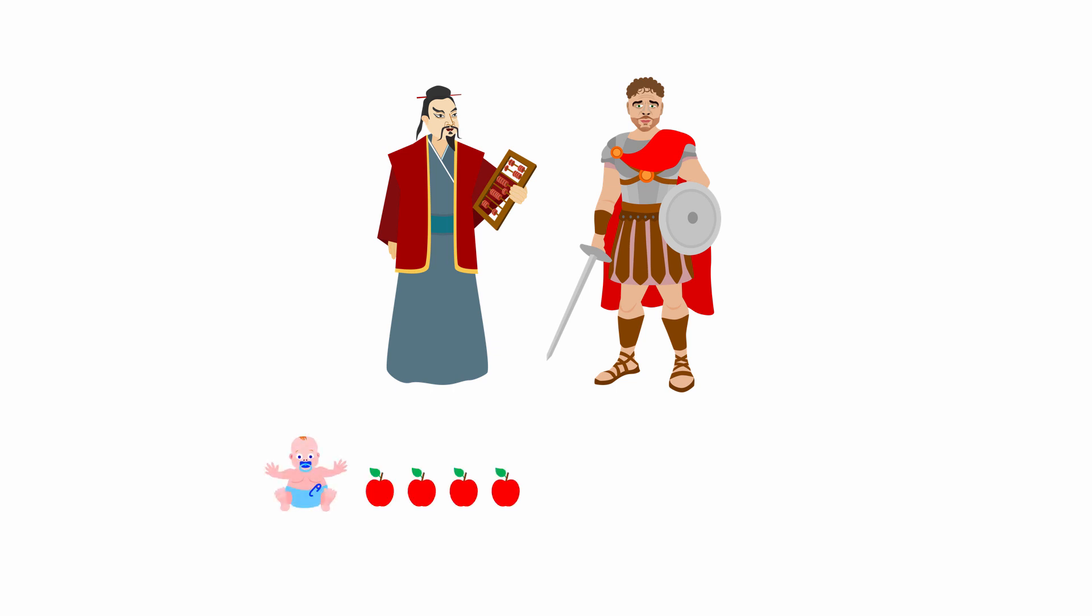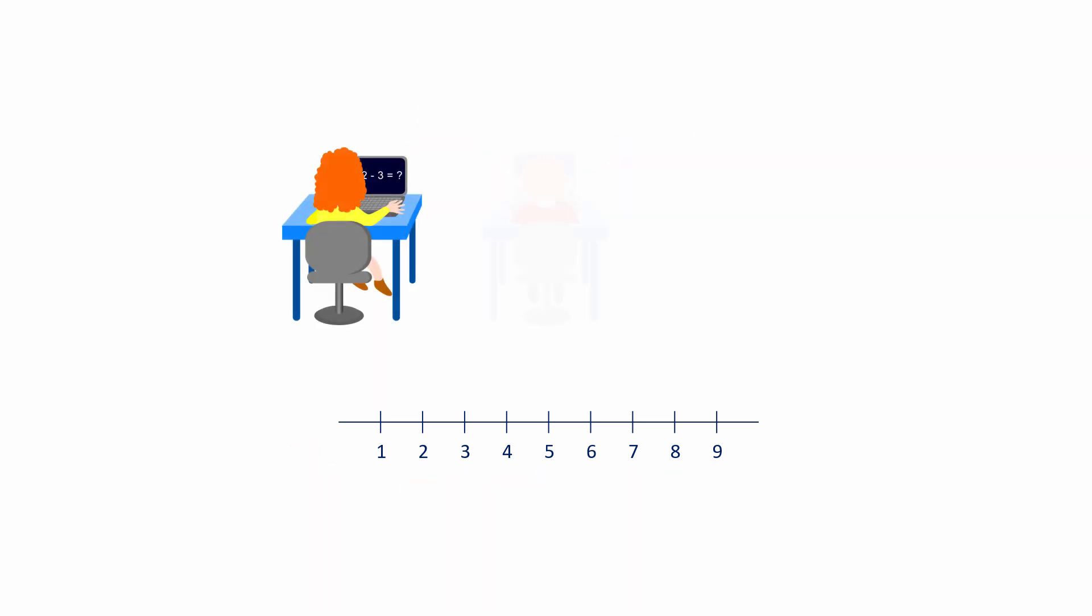From an early age, even as we're learning to talk, we learn to count using positive whole numbers, the so-called natural numbers. Then, in school, from as young as 8 or 9 years old, we're introduced to negative whole numbers.